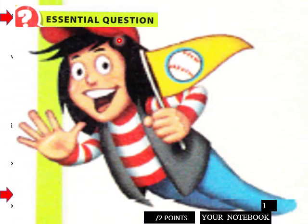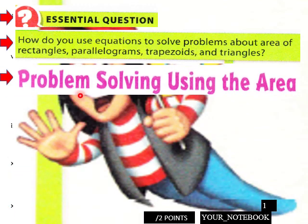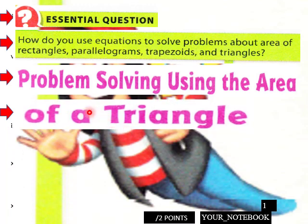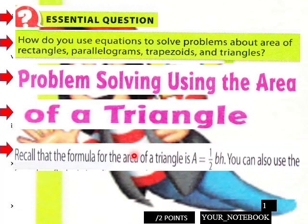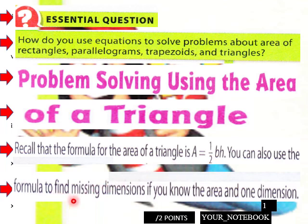The essential question of this lesson is: how do you use equations to solve problems about area of rectangles, parallelograms, trapezoids, and triangles? We're going to do problem solving using the area of a triangle. Recall that the formula for the area of a triangle is A = one-half base times height. You can also use the formula to find missing dimensions if you know the area and one other dimension.